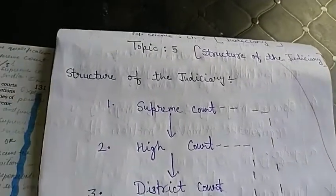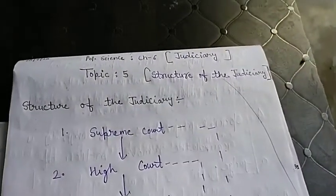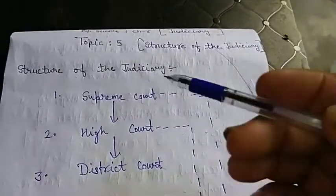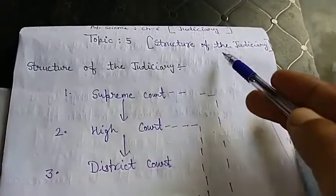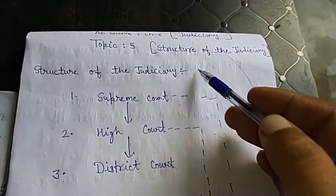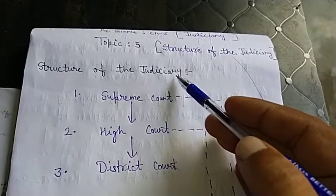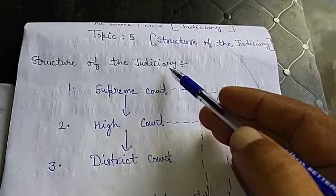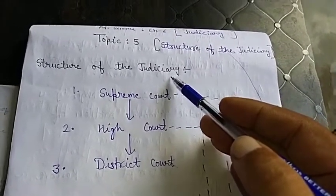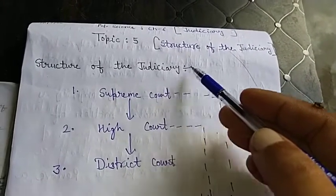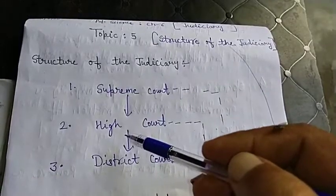Good morning students. Chapter 6 Judiciary, and topic 5 is Structure of the Judiciary. The third organ of the government is Judiciary. It has different types of courts.